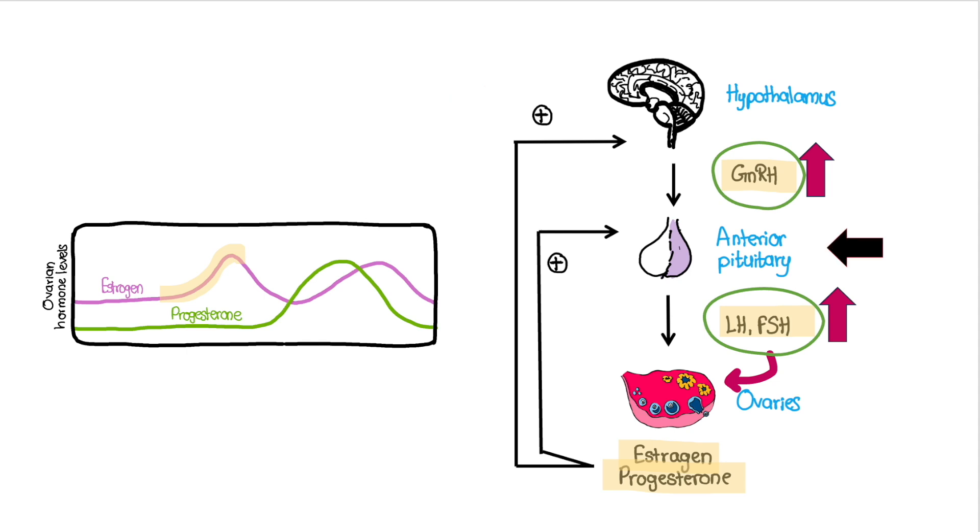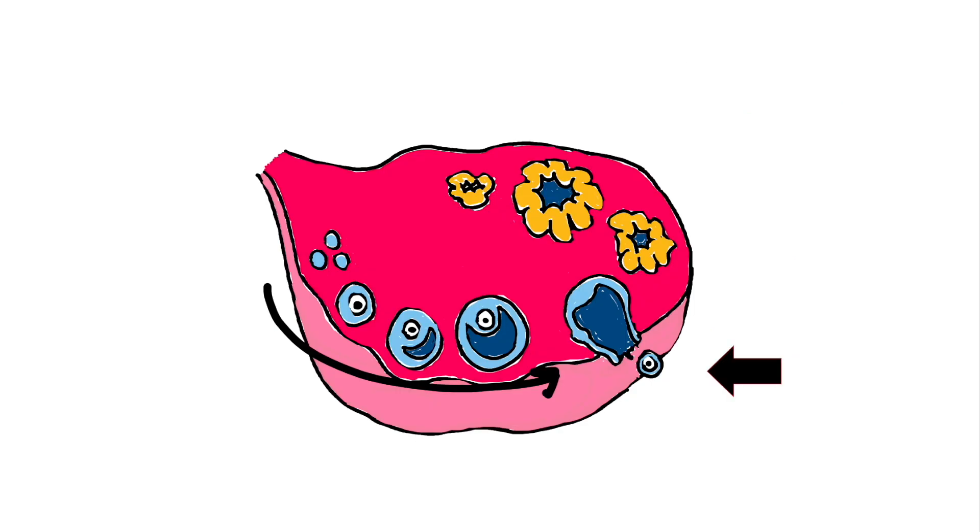This leads to the release of a large amount of LH. The LH surge is crucial for triggering ovulation. It stimulates the release of a mature oocyte from the dominant follicle in the ovary. This surge marks the peak of fertility in the menstrual cycle as ovulation allows for the possibility of fertilization and conception.